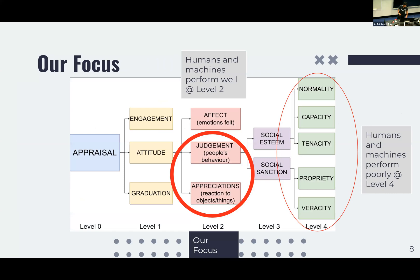What we found to support that this is the right direction: in our earlier studies, both machines and humans are performing badly at the fine-grained level. At the level of distinguishing judgment from appreciation, both humans and machines are performing comparably poorly. So we took a step back. Humans can identify whether a sentence is judgment or appreciation, but they can't pinpoint the subcategory — even among annotators from the same cultural background with English as a first language who know the appraisal framework. We asked: can we use specific words to distinguish judgment from appreciation?